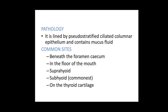Regarding pathology, a thyroglossal cyst is lined by pseudostratified ciliated columnar epithelium and contains mucous fluid. The common locations are beneath the foramen cecum, in the floor of the mouth, suprahyoid, subhyoid, and on the thyroid cartilage. Of these, the subhyoid location is the most common location of a thyroglossal cyst.